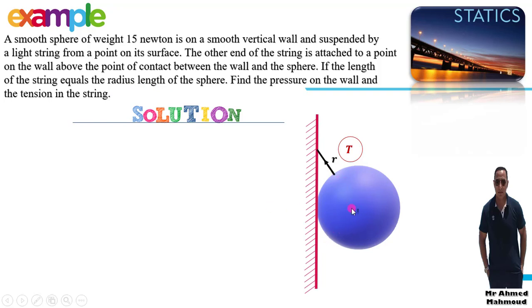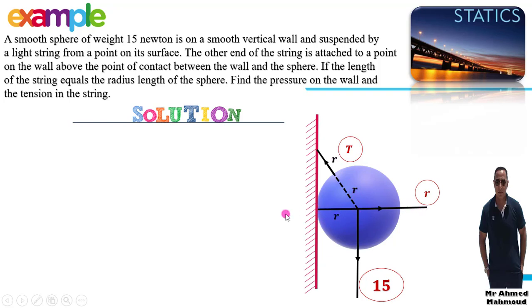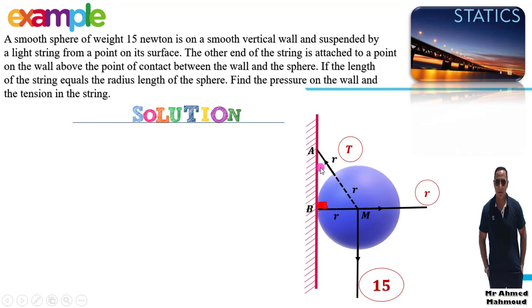Since the string length equals the radius R, triangle MAB has sides R, R, and R — an equilateral triangle where MA = AB = BM = R. Wait, the string equals R, and the radius equals R, so two sides equal R. The right angle triangle gives: angle A = 30° and angle M = 60°.